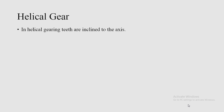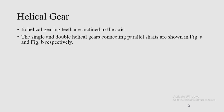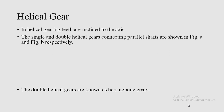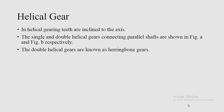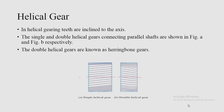In helical gearing, the teeth are inclined to the axis — a helix angle is present. Single and double helical gears connecting parallel shafts are shown in figures A and B respectively. In figure A, a single helical gear is shown; in figure B, a double helical gear is shown. Double helical gears are also known as herringbone gears.